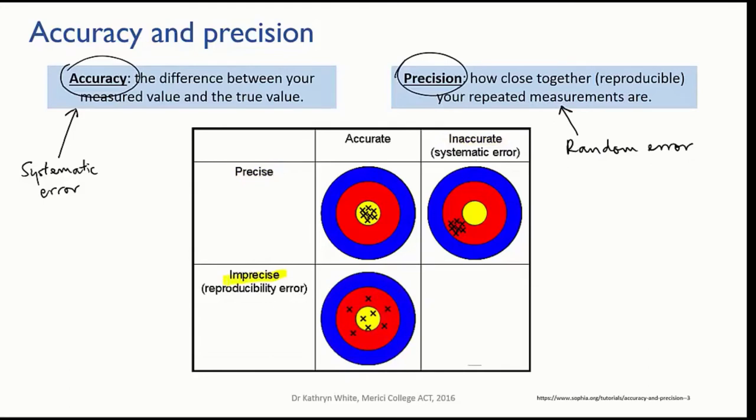The third box shows an archer with low precision, shown as a wide scattering of shots. Imagine an inexperienced archer, not skilled in reducing the random fluctuations of her body. Or maybe an experienced archer, but on a gusty day, with the wind blowing in many directions.